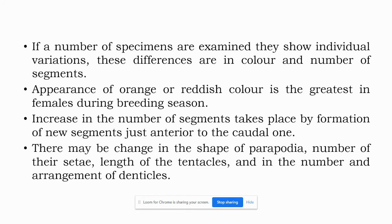If several specimens are examined, they show individual variation in color, shape and number of segments. The appearance of orange or reddish color is greatest in females during the breeding season. Also, the size of females is larger as compared to males of the same age. Increase in the number of segments takes place by formation of new segments just anterior to the caudal segment. There may also be a change in the shape of parapodia, number and type of chaetae, length of the tentacles, and in the number and arrangement of denticles.